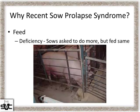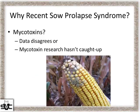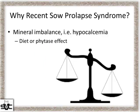Why the recent increase in sow prolapse? One thing we came to first was feed — we're asking sows to do more than they ever have, but are we changing the feed to match? Another option is mycotoxins, though the seasonal trend data somewhat disagrees with that. Another option is mineral imbalance — a hypocalcemia diet or phytase effect. Calcium is really important in smooth muscle contractions, so we could be missing something there. We could also have increased abdominal pressure pre-farrowing from constipation, larger litter sizes, more total born, and increased birth weight.